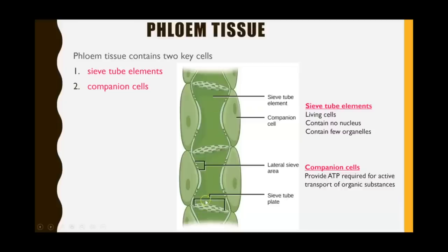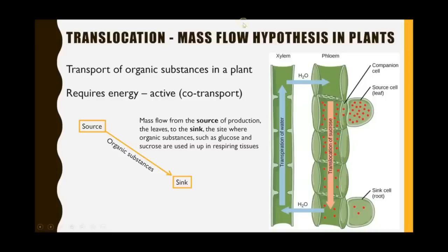This is all linked to what we call the mass flow hypothesis. There is always a source, which is where the organic substance is created — in this example, sucrose created in the leaves during photosynthesis. The sink is where the sucrose is going to be transported to and used by the respiring cells. We'll go through exactly how sucrose gets from the source cell into the sieve tube elements all the way to the sink cell.